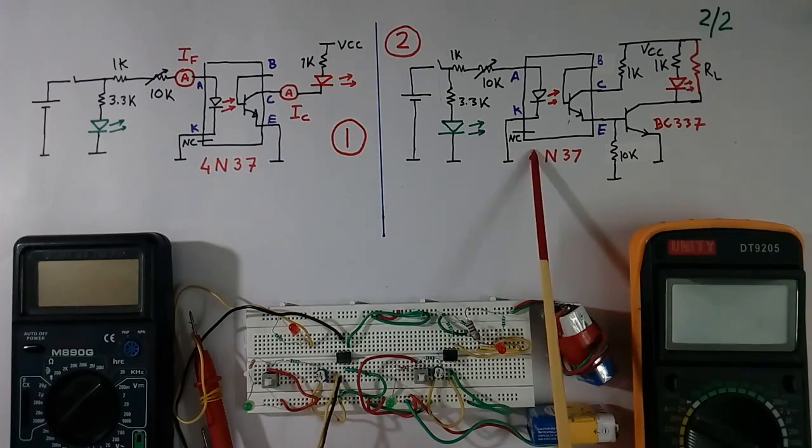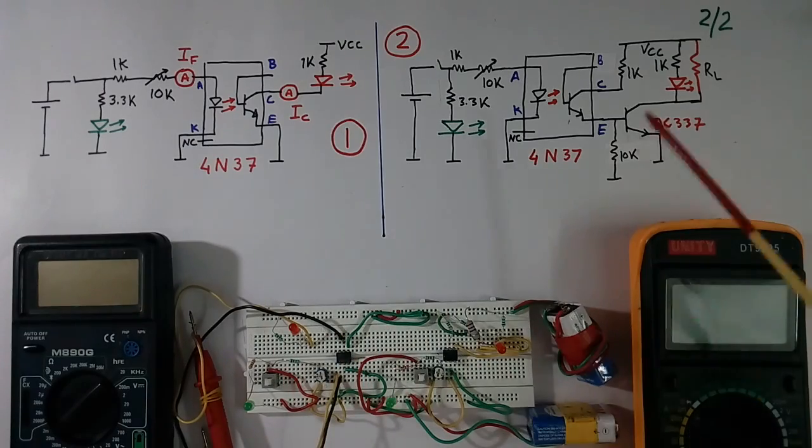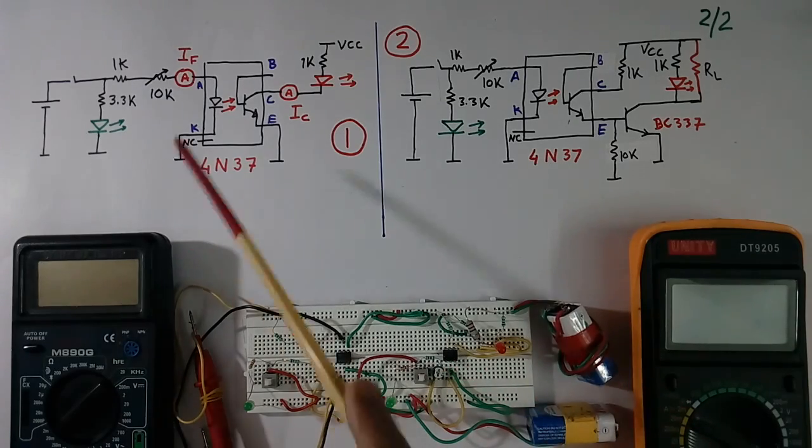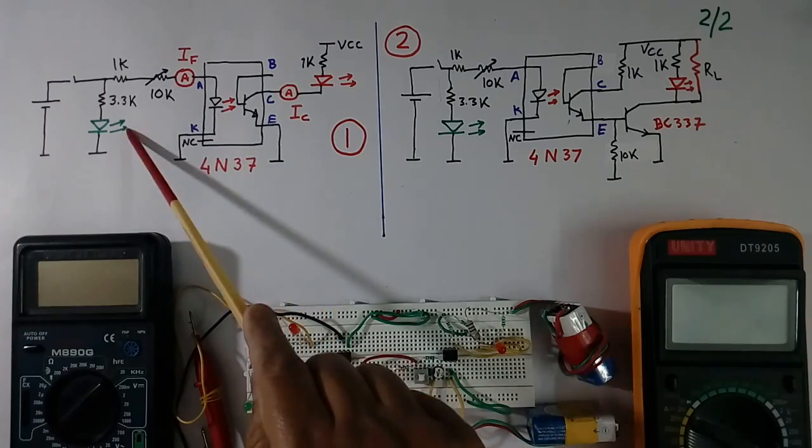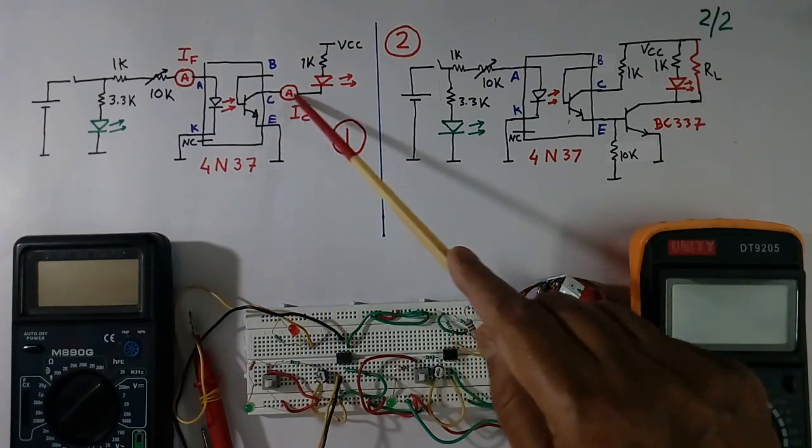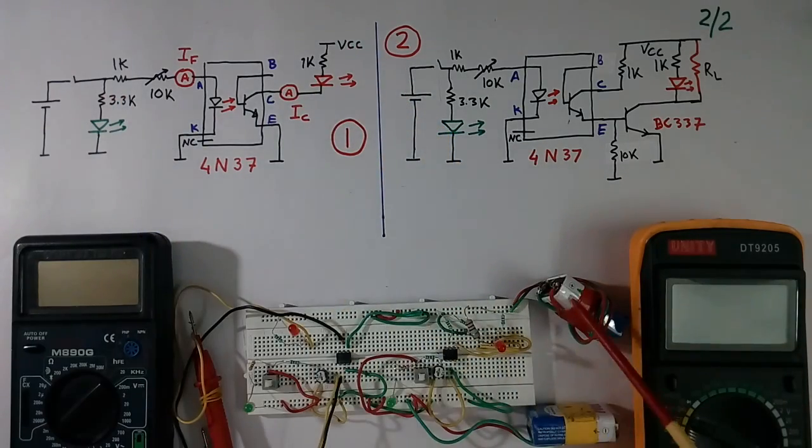These are 2 circuits. This circuit is this and this circuit is this. I have used 2 batteries - one for this side LED side, another one is photo transistor side. So this and this 2 are isolated.